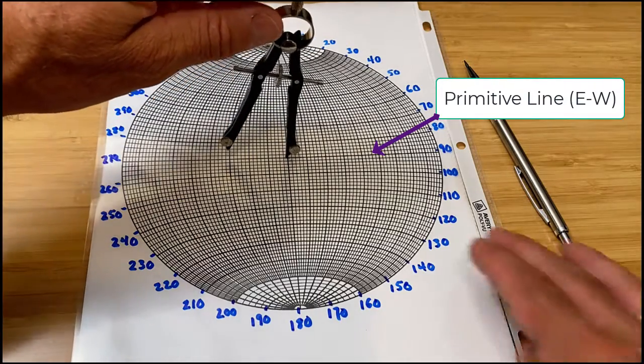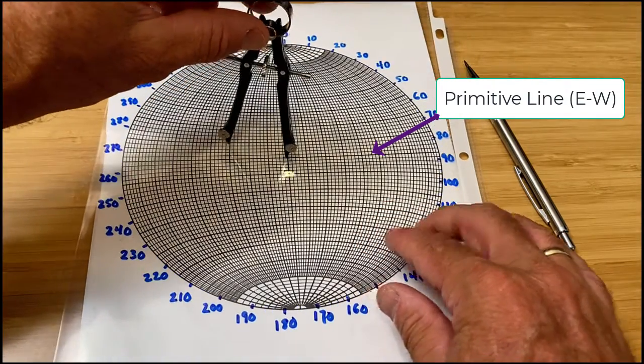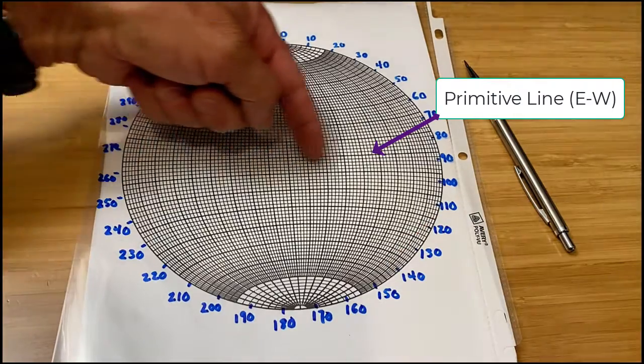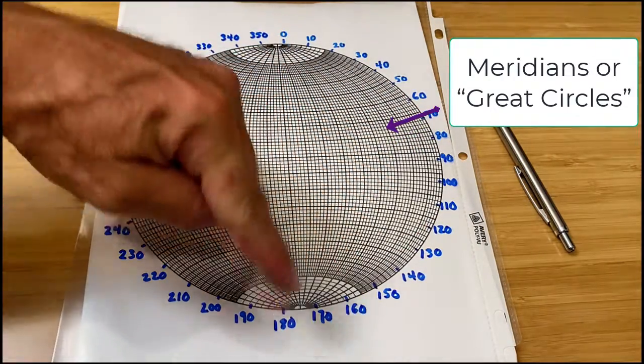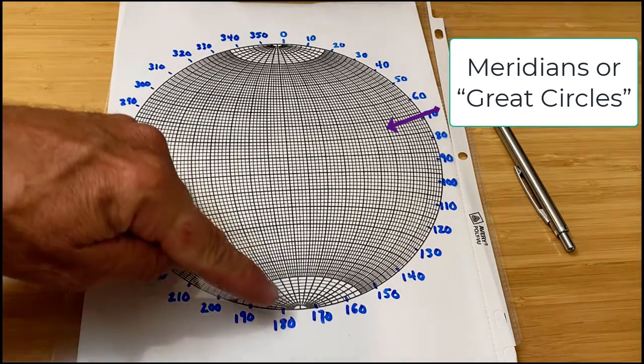And the horizontal line across the middle, the east-west line, is called the primitive line by the way. And the curved lines on the other hand coming from north to south are lines of meridians or great circles.